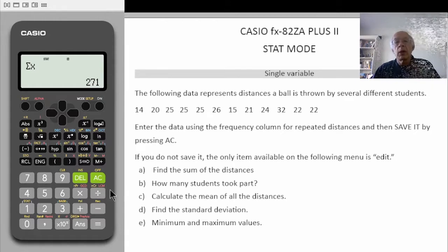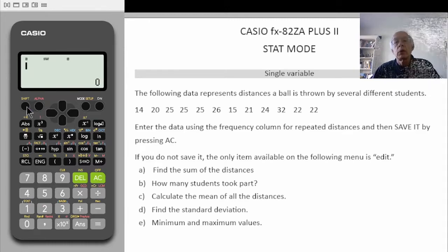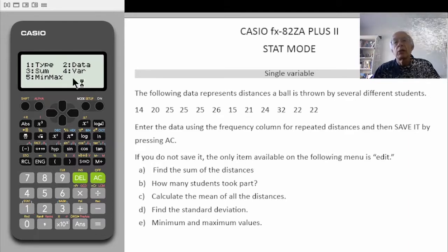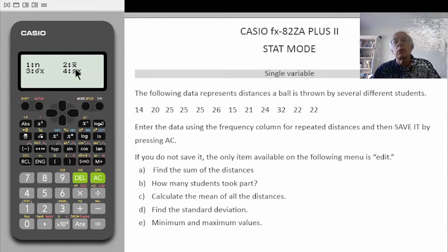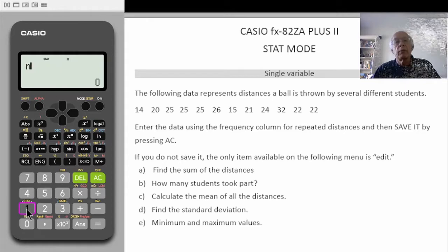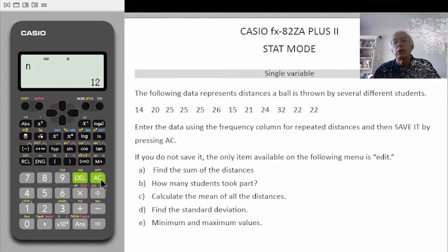Number b: how many students took part? There again we need to press shift, and number 1. We are talking about a variable so we select number 4. There again there is a menu — n, the first one is the number of students. We select 1, equals, and we have 12 students. Clear the screen.